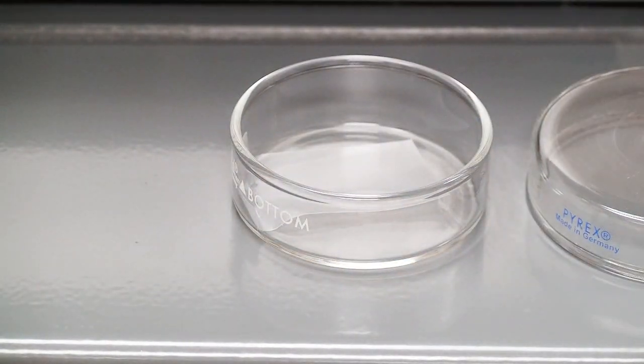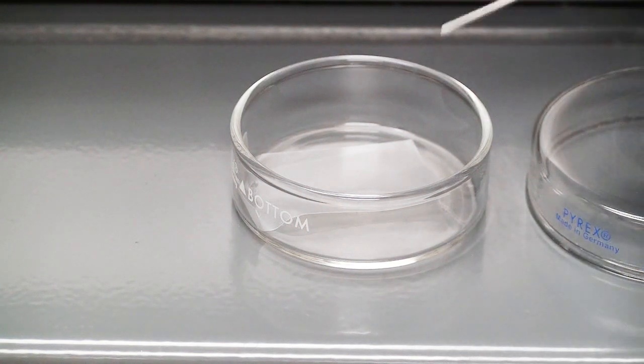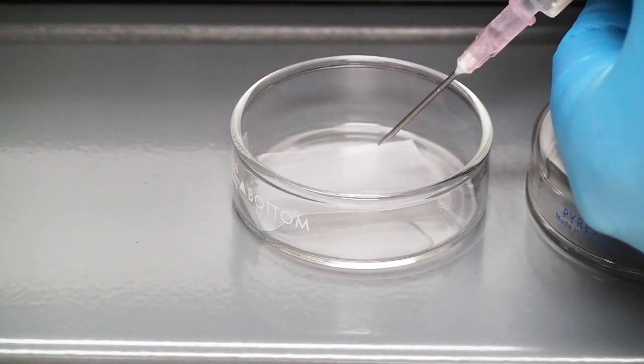Remember to float those on top. Don't drop your grid from on high, otherwise they could stain on both sides and you only want it to float on the section side down. Here I'm in front of the microwave, and you can see the parafilm in my petri dish.